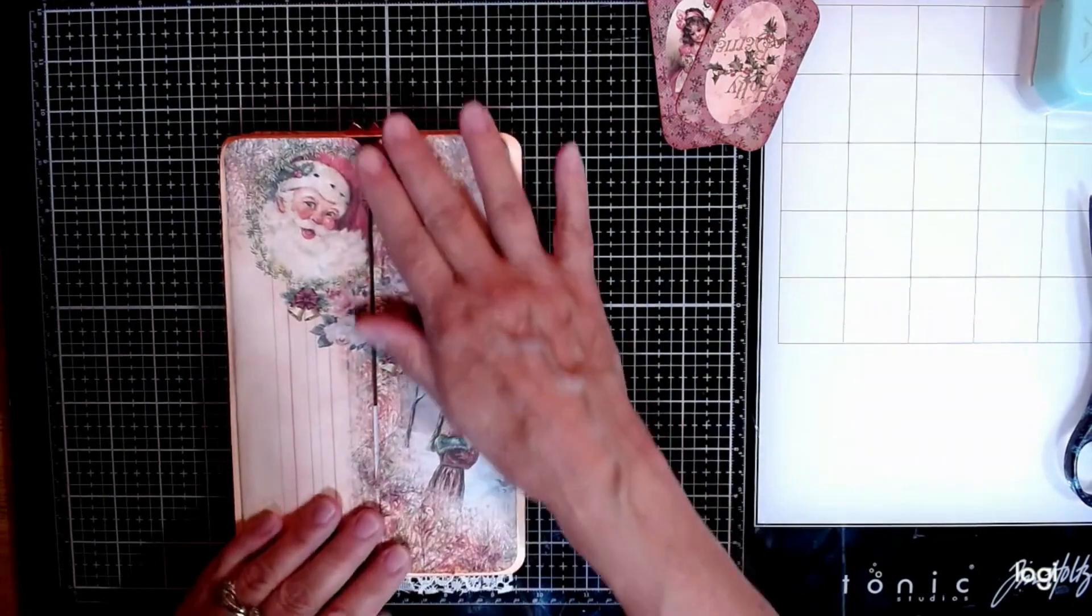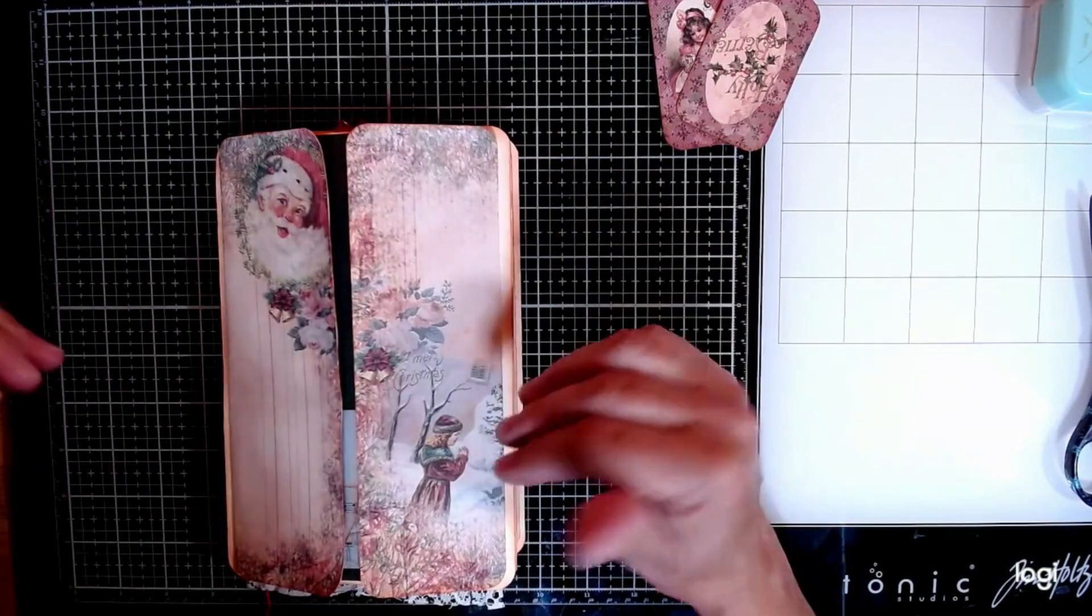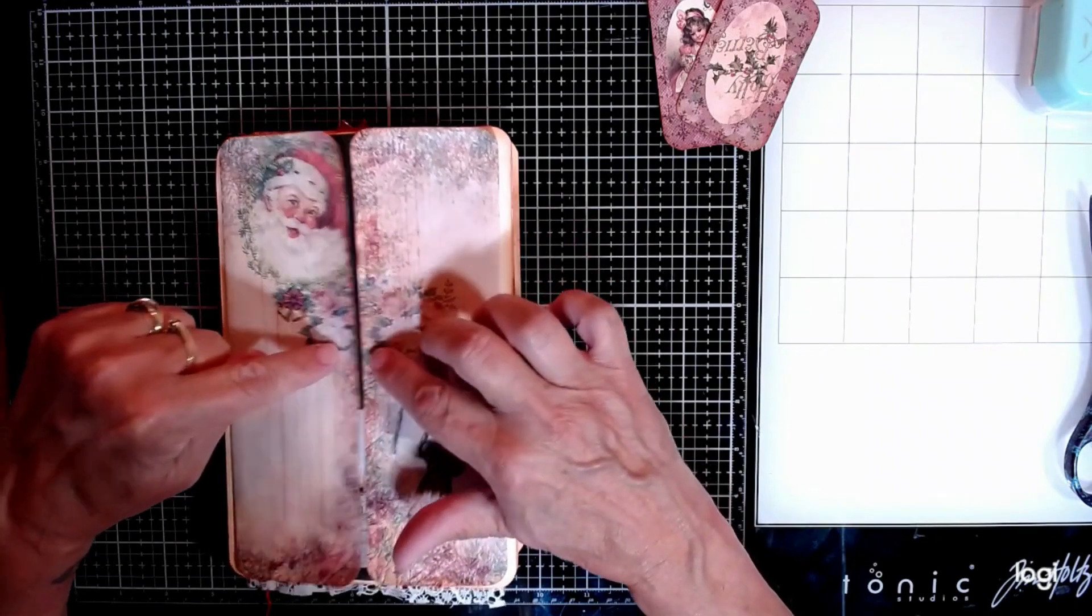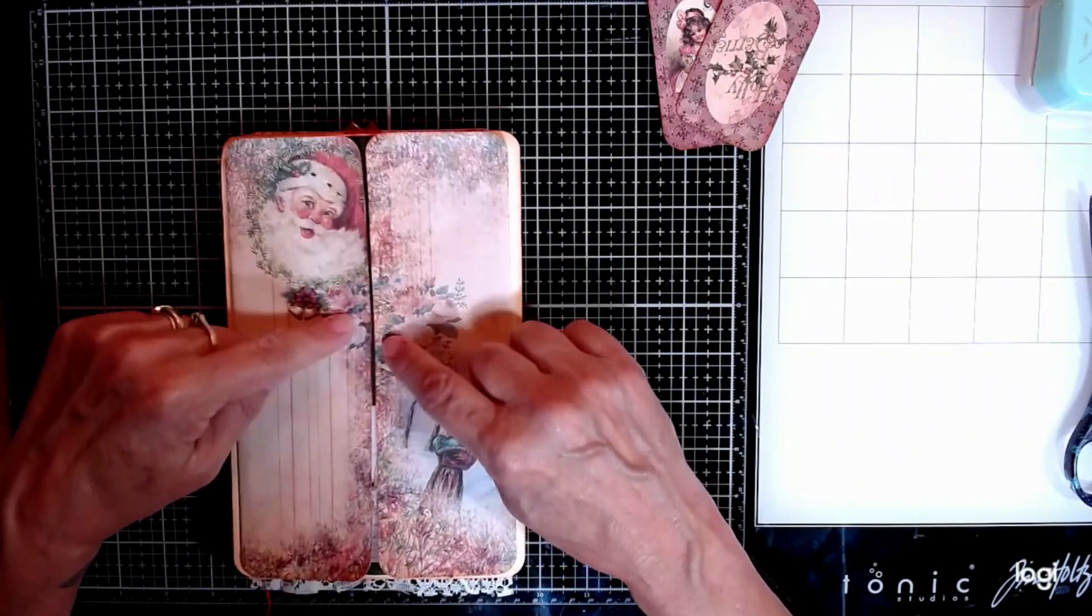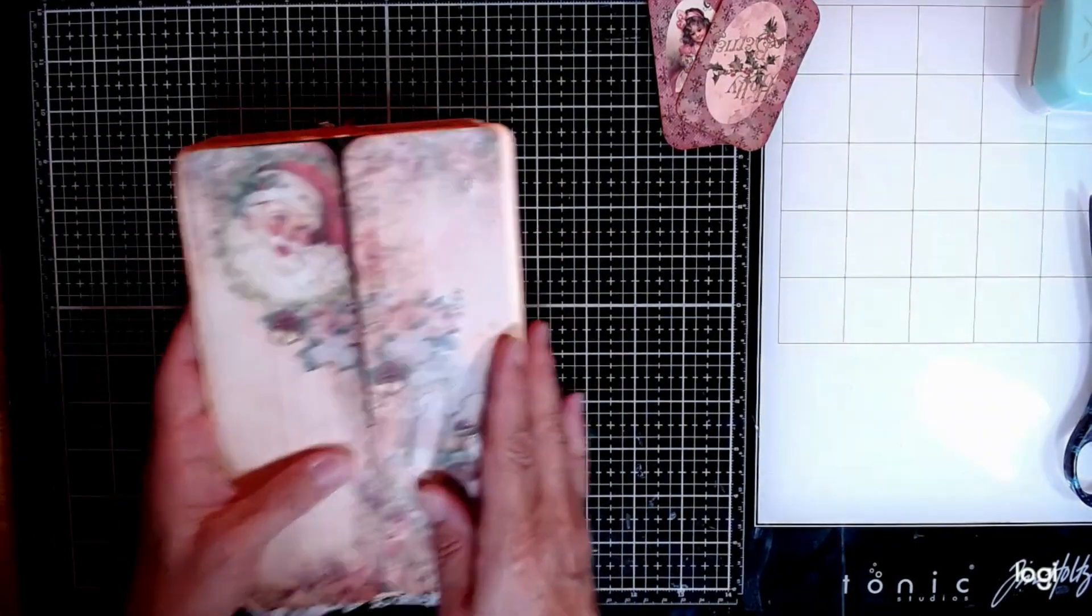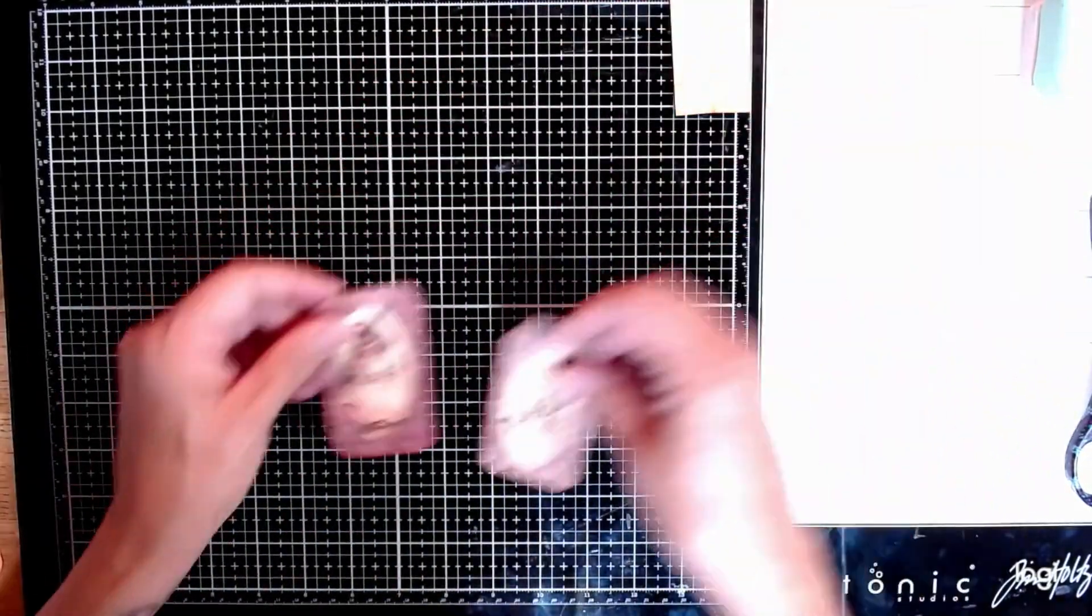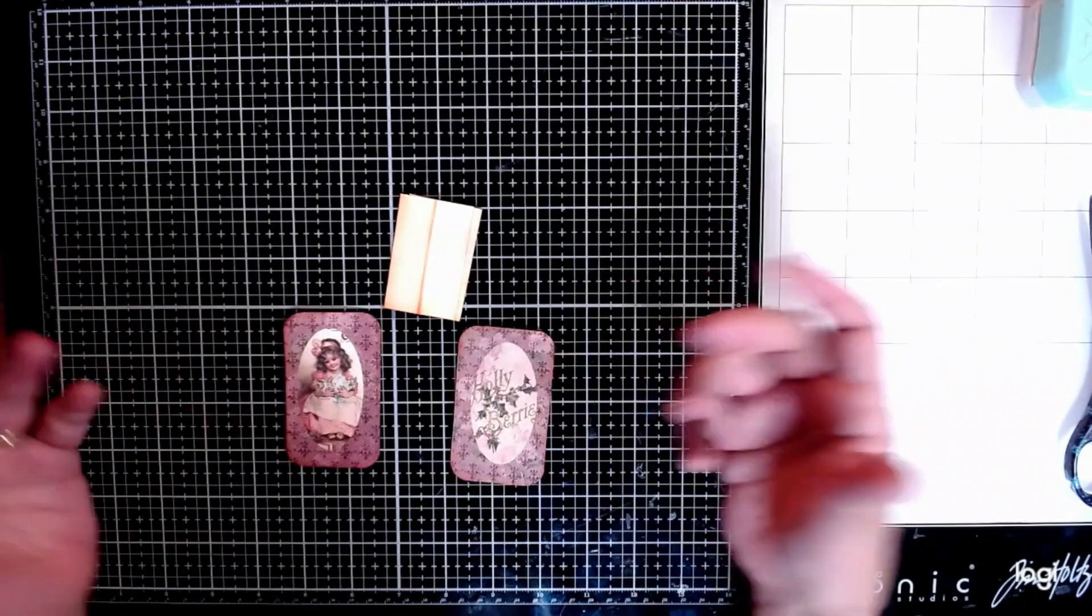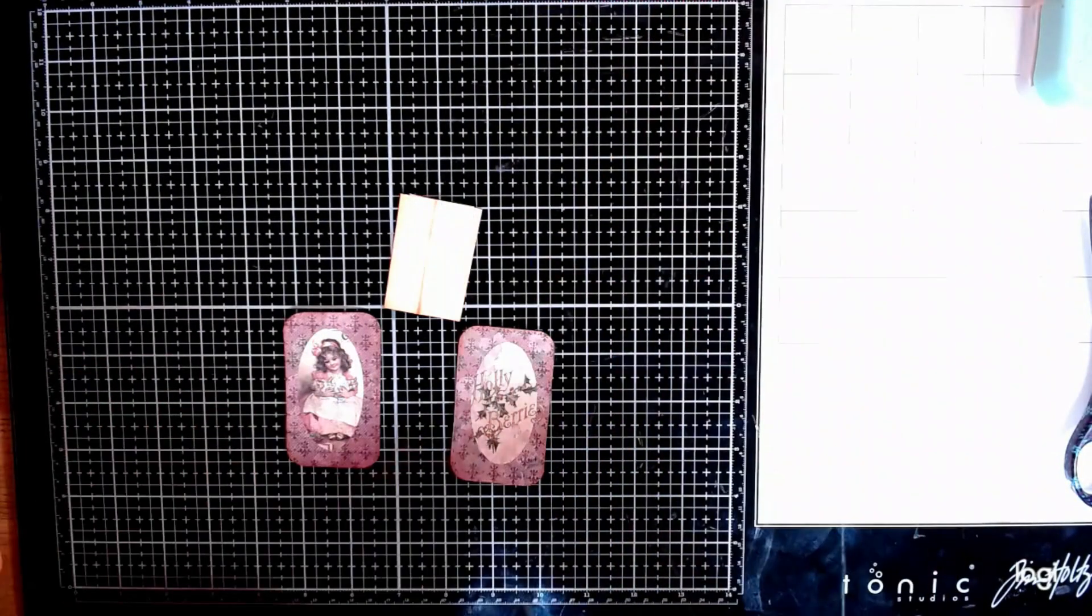If you guys remember, I've been doing the flip-flop altered file folder thingamabobber. And I'm sitting here and I'm trying to figure out how I'm going to get this to stay closed. And I think I have it. So I'm going to set this off to the side. I'm going to make a little hinge. I don't know. That's what it's called. We'll see.